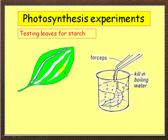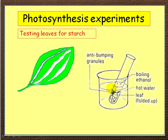First, we take our leaf and stop all the reactions by putting it in boiling water — we kill the leaf. Then we extract the chlorophyll using ethanol. Chlorophyll dissolves in ethanol, but we can't heat ethanol directly because it's flammable, so instead we put it into a beaker of hot water. The water is boiled at 100°C; ethanol boils at 80°C. As the ethanol boils, it dissolves the chlorophyll, and the leaf starts to turn very pale.